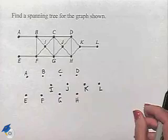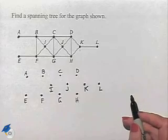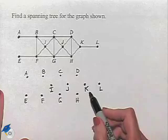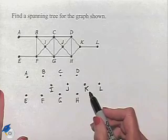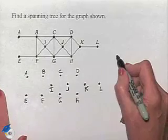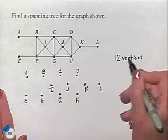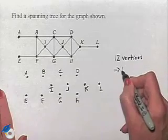Now in order to have a spanning tree, we're going to be looking for a subgraph that will contain all of the graph's vertices. It will be connected, but it will contain no circuits. And one thing we know is that if we have 12 vertices, then our spanning tree should have 11 edges.